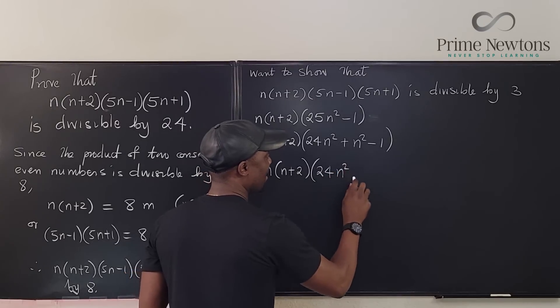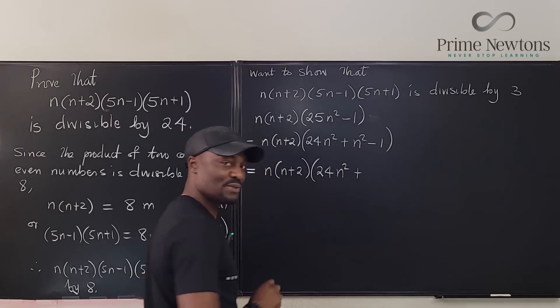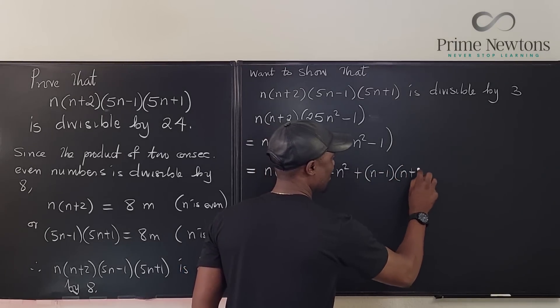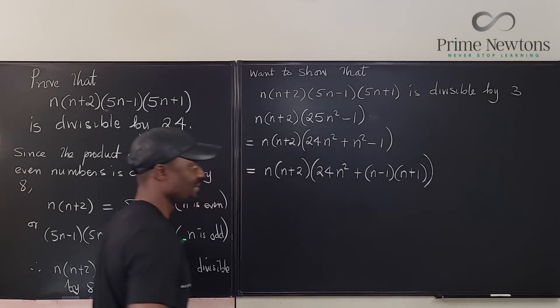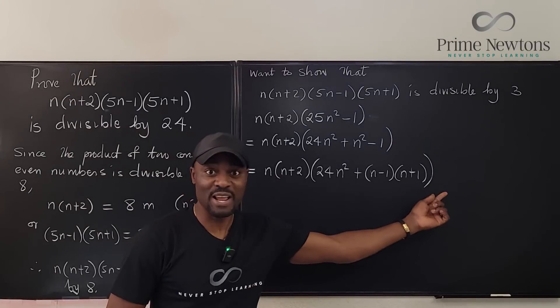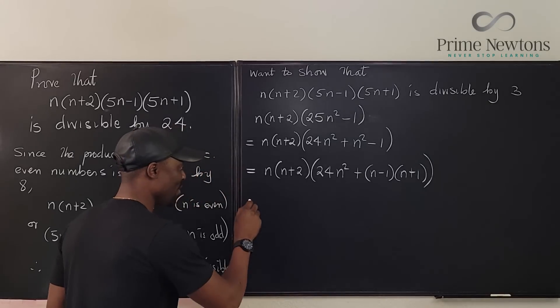I already see the answer because what I see now is I see n times n plus 2 times 24n squared plus this is difference of two squares. I can write it as n minus 1 times n plus 1. Nice.